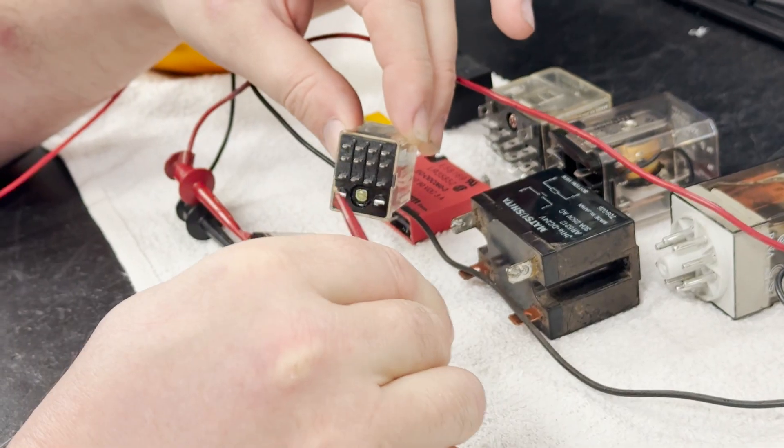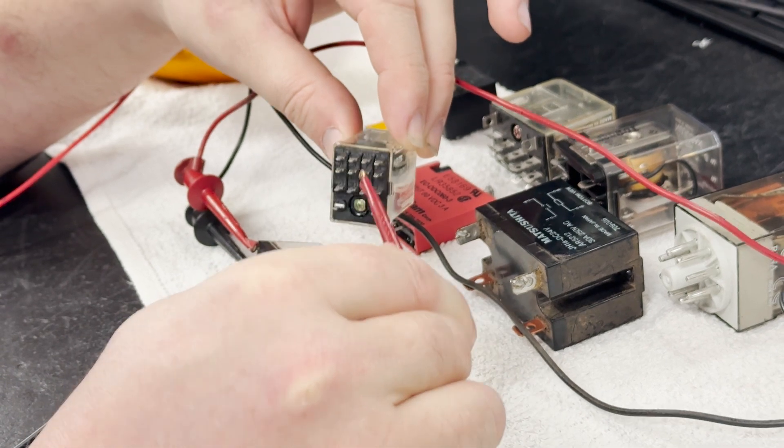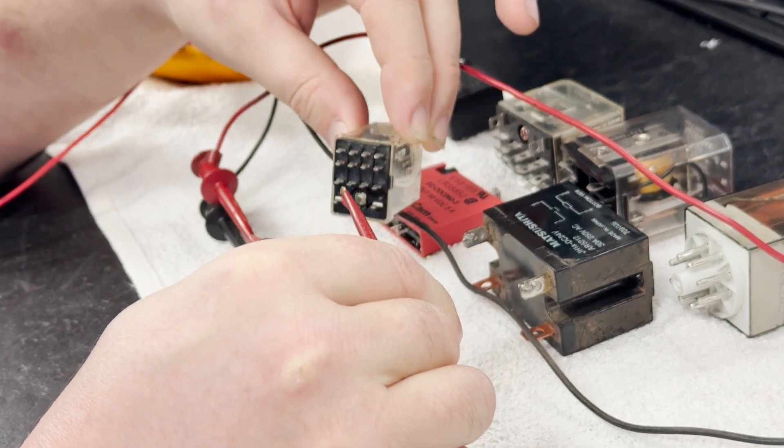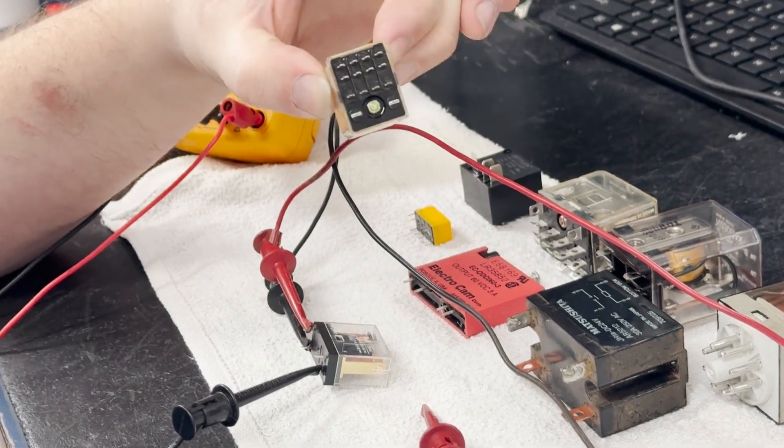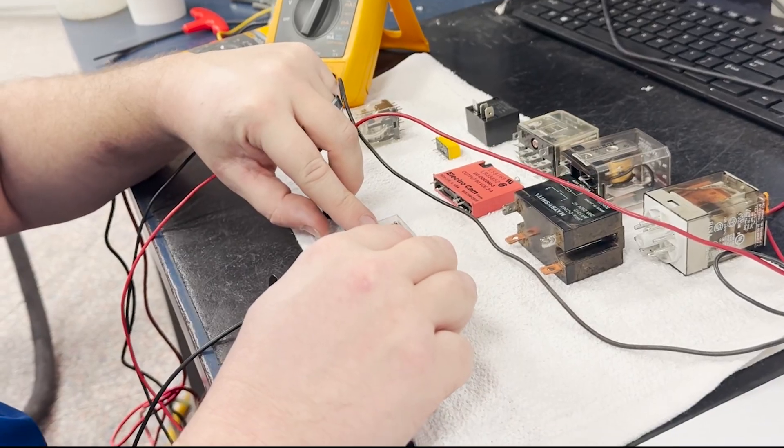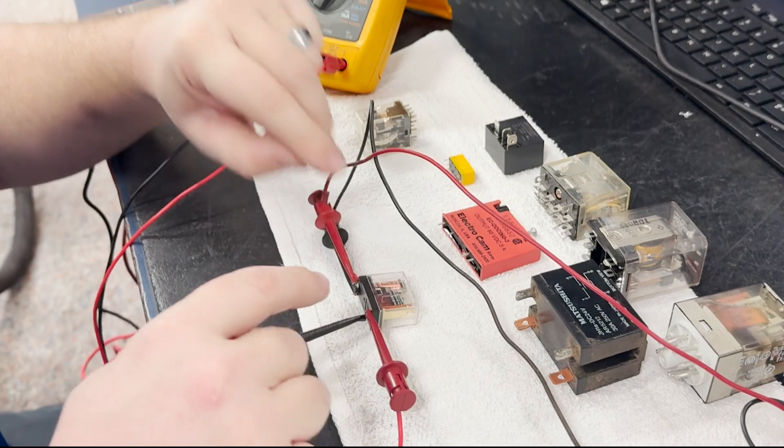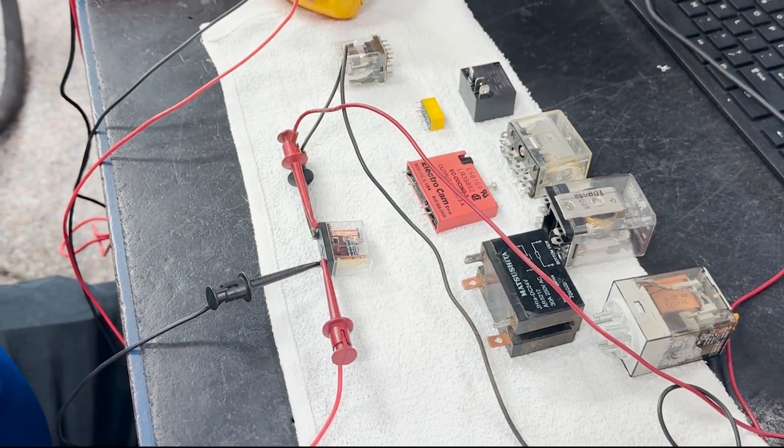Poles indicate the number of circuits a switch can control, whereas throws determine the number of positions a switch can control. So this switch can only be thrown in one position since it is a single throw relay.